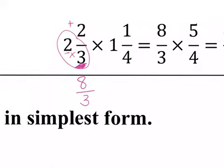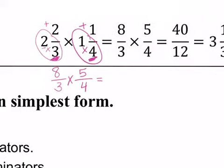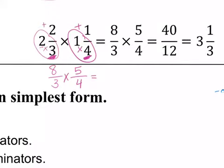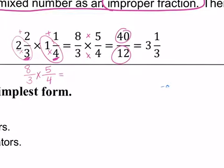Times 1 and 1/4. So, we multiply our whole number by our denominator, 1 times 4, and add your numerator. So, 1 times 4 is 4, plus 1 is 5, and I keep the same denominator. And you can multiply across. So, in the top example, they did that. They multiplied across. 8 times 5 is 40. 3 times 4 is 12. And then, they turned it back into a mixed number.